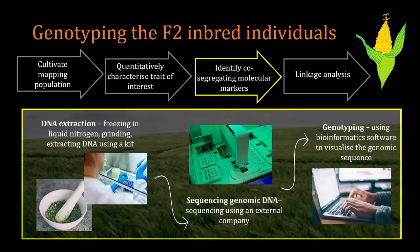Once you've created your mapping population, defined your molecular markers, and measured your traits, you need to genotype the F2 inbred individuals before performing a linkage analysis. Simply put, you extract the DNA of the mapping population — perhaps using grinding and some kind of extraction kit — then sequence the DNA and use bioinformatic software to identify which traits have co-segregated with the molecular markers.